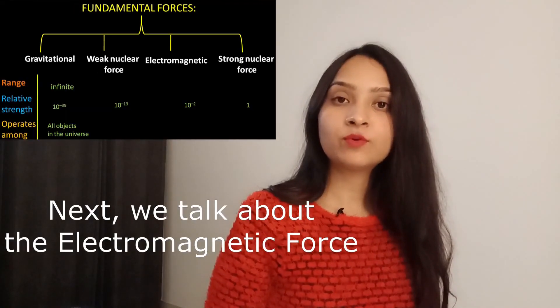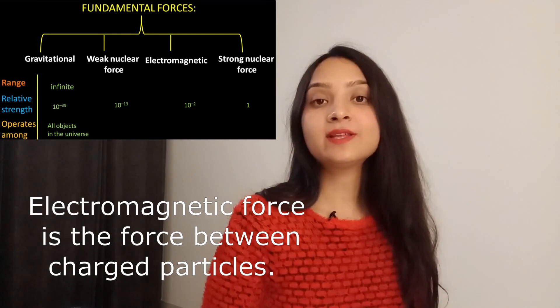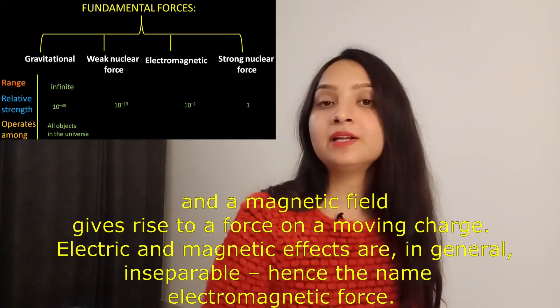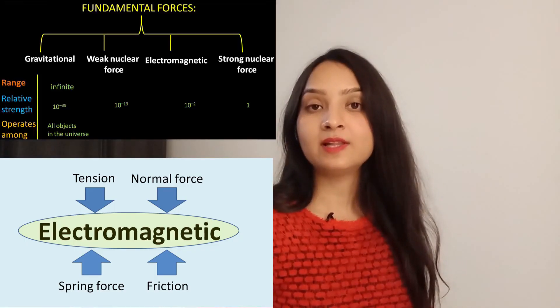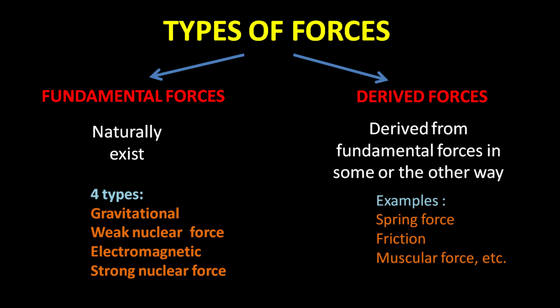The electromagnetic force can be both attractive and repulsive — it is the force that exists between charged particles. Charges in motion produce magnetic fields, and magnetic fields give rise to force on moving charges. The electromagnetic force forms the basis of macroscopic forces like tension, spring force, normal force and friction. Forces can be categorized as fundamental and derived — muscular force, spring force and frictional contact forces are examples of derived forces, which are not independent of fundamental force laws.